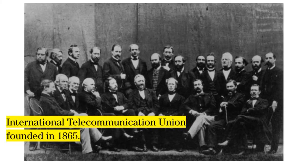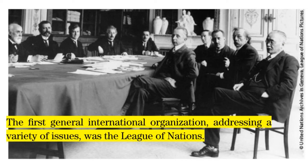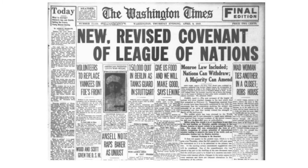The first and oldest international organization, which was established by a treaty, had a permanent secretariat and a global membership, was the International Telecommunication Union, founded in 1865. The first general international organization addressing a variety of issues was the League of Nations. The United Nations followed this model after World War II.